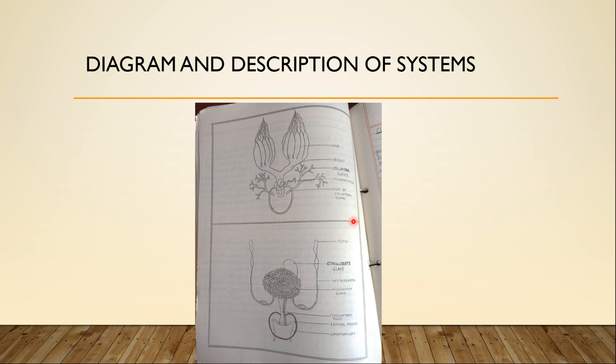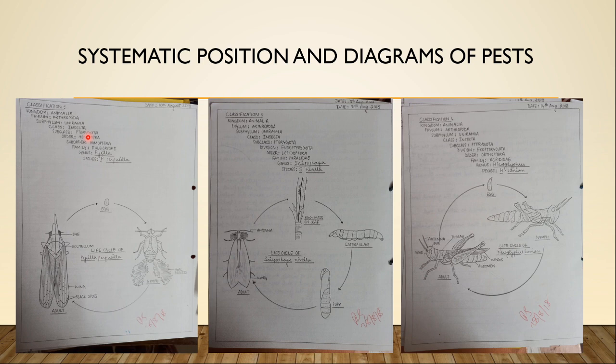For pests, on the left side you have to write the systematic position first, and this systematic position should always be written in a slant format. You should not write them straight; you should always write them at an angle. The place where you start Kingdom Animalia, you should leave a little space and then indent each subsequent level.